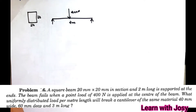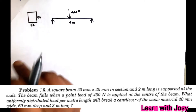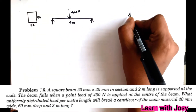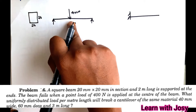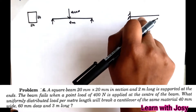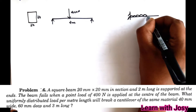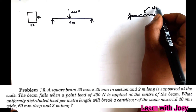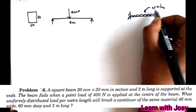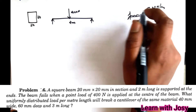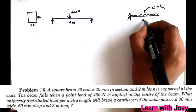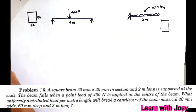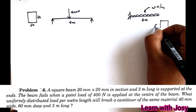What uniformly distributed load per meter length will break a cantilever of the same material? This is a cantilever beam — same material. The length is 3 meters, and the section is a rectangular section which is 40 mm wide and 60 mm deep.